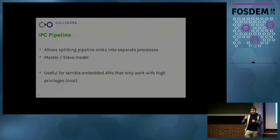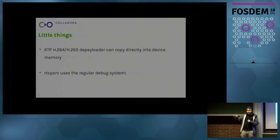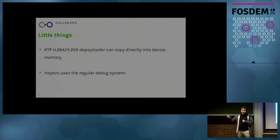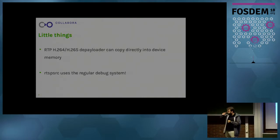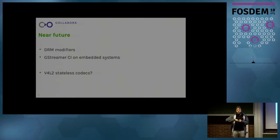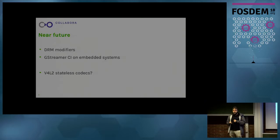Some smaller things: the RTP H.264 decoders can now take memory from downstream elements and write directly into it, so a hardware decoder that needs linear or CMA memory can allocate it and the depacketizer writes directly in. The RTSP source finally uses the regular debugging system. Coming soon: DRM modifiers for zero-copy with tiled or specially compressed memory that GStreamer doesn't understand internally but can connect between decoders and sinks. There's also an intern working on automated GStreamer testing on embedded boards, and stateless codecs support is coming.